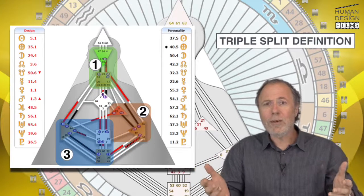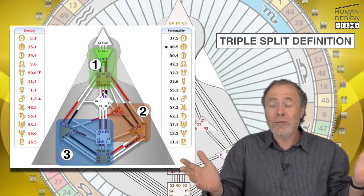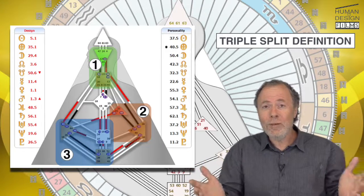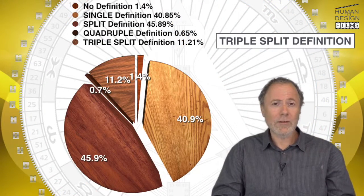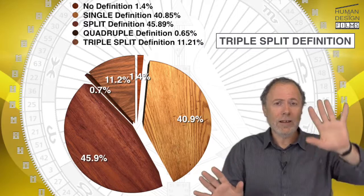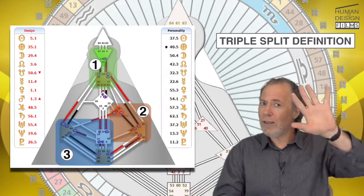It's a little bit like having three people in one. And it's not crazy. There's nothing wrong with you. I mean, there's about 10% of people in the world have a triple-split definition. Three distinctly different sides of themselves that don't communicate consistently.